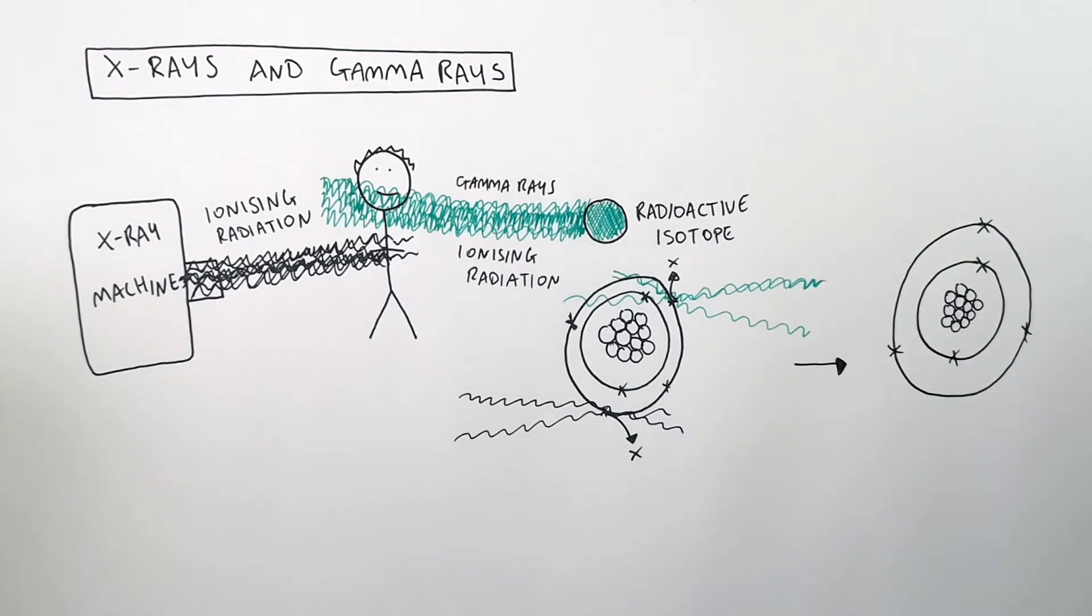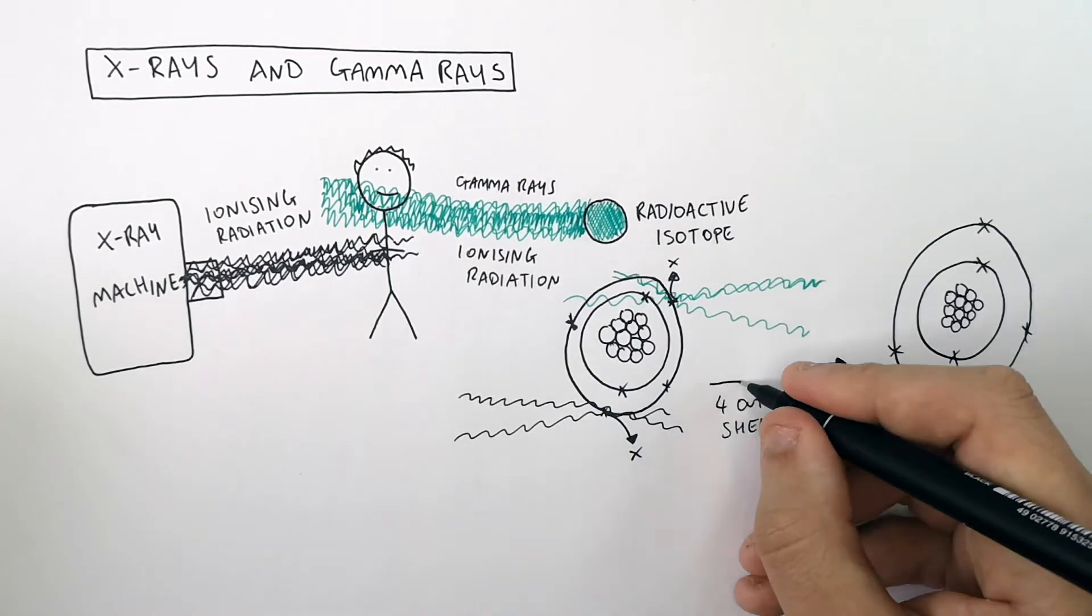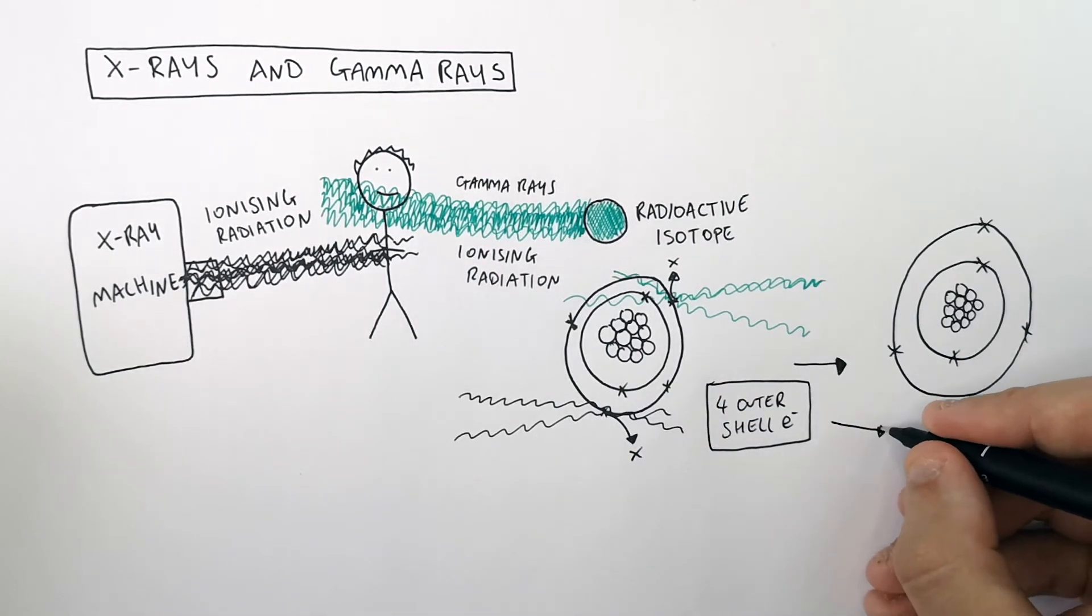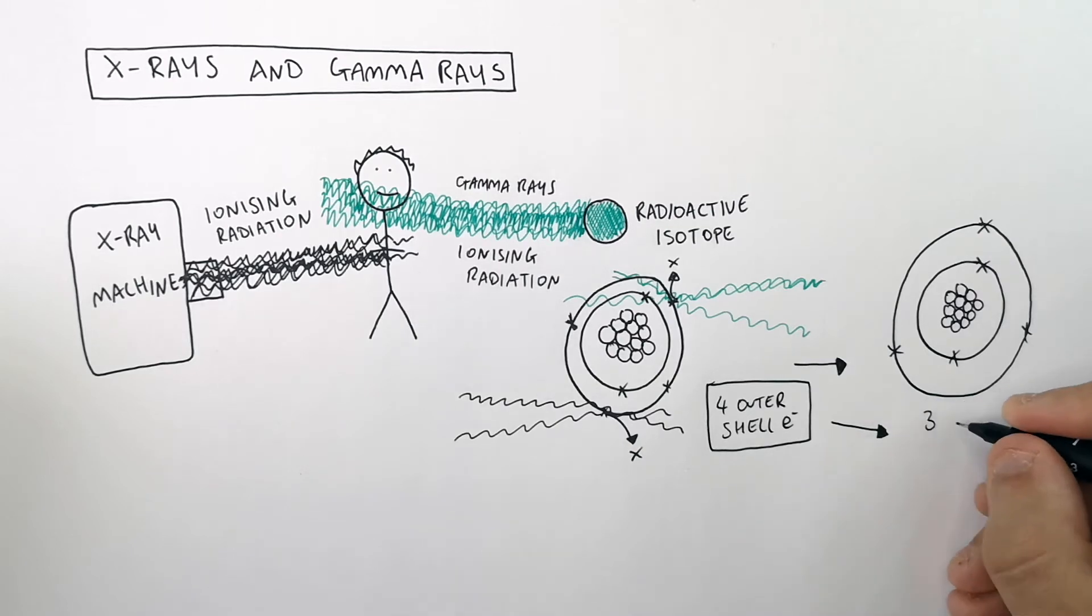You might have an atom in your body with four outer shell electrons, and then after exposure to x-rays or gamma rays, you could end up with three outer shell electrons in your atoms.